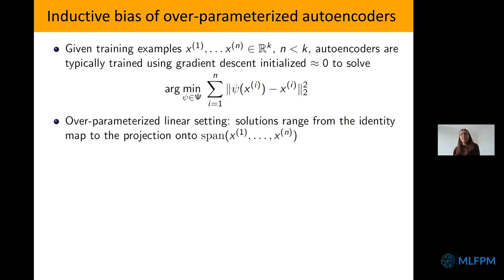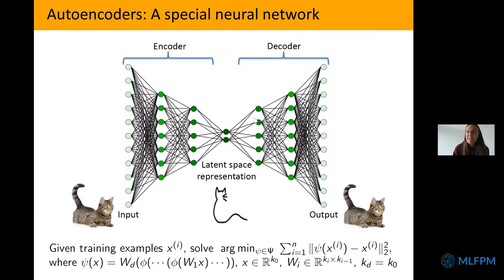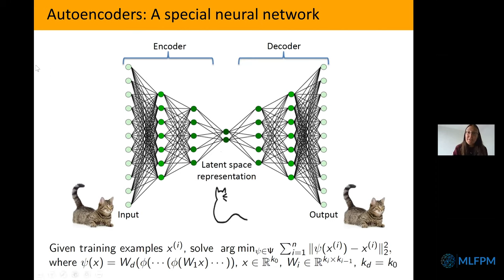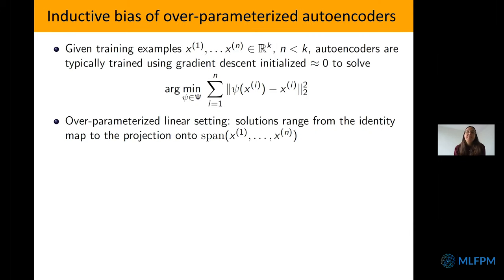I want to understand what these neural networks actually learn — what is the representation that is learned? How should I choose depth and width? In general, what is the function class learned by these neural networks? In particular, we see in the classification setting that people are going more and more to the over-parameterized setting — making these neural networks as large as possible, even though they can then get down to loss zero, and they're still generalizing very, very well. That's the setting I want to analyze.